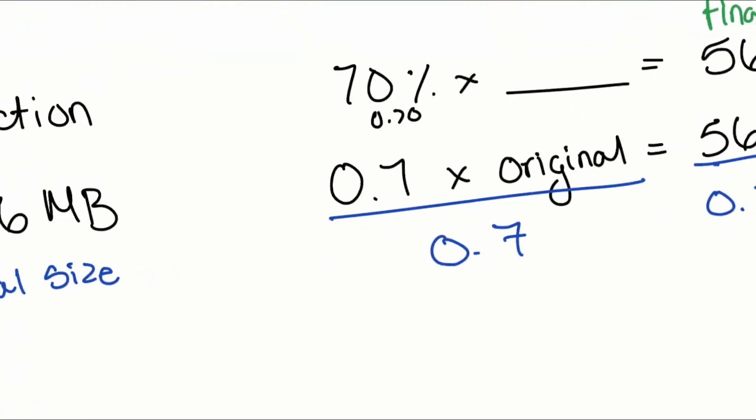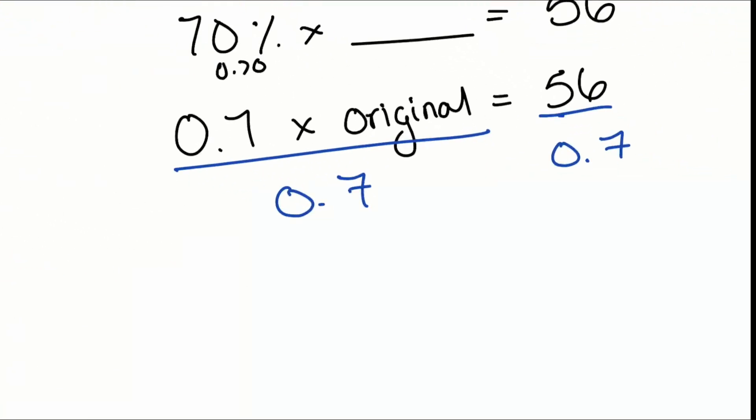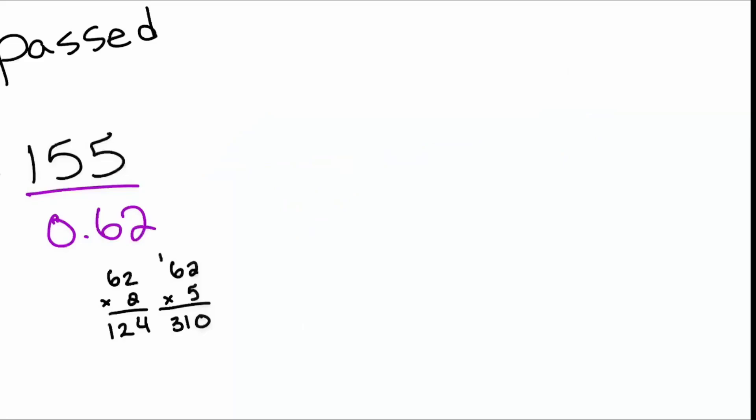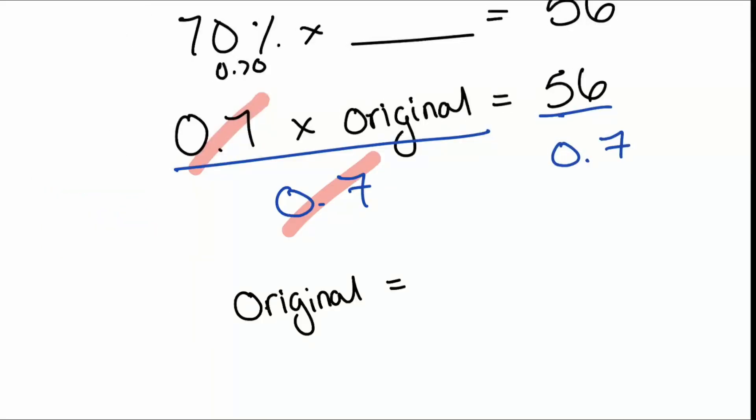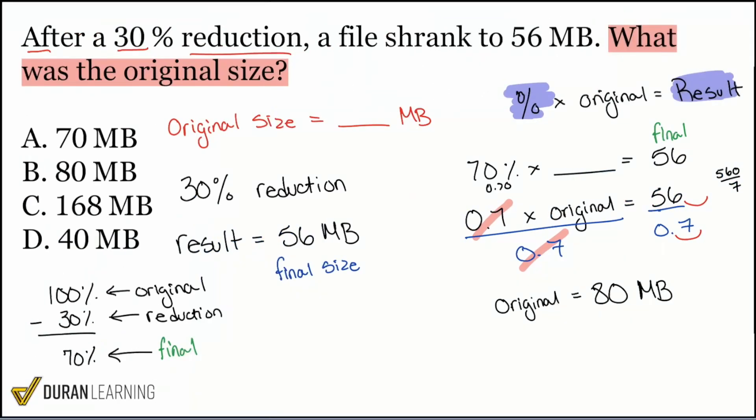And now all I got to do is divide both sides by 0.7 and look at what I got. There we are. Don't think that the answer is going to be 8. Be very careful. We're going to cancel out right there on the left side, and our original value, we can just go ahead and use our little decimal rule right away by moving it to the right once and then once over here too. So what we now have is 560 divided by 7. 560 divided by 7, that's going to be 8 with a 0 at the end, which is going to be 80. So the original file size is 80 megabytes. That is the original file size right there, 80 megabytes.